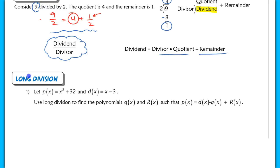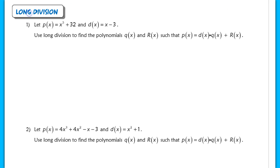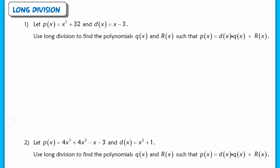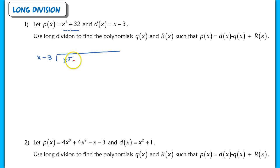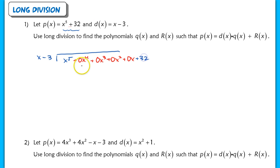Let's get to long division. This first problem looks pretty basic but requires placeholders. When we long divide, we take our divisor and place it on the outside. The dividend goes on the inside: x to the 5th. I have to write terms in descending order with placeholders — 0x to the 4th, 0x to the 3rd, 0x squared, 0x, and then plus 32. These placeholders are essential for long division to work.